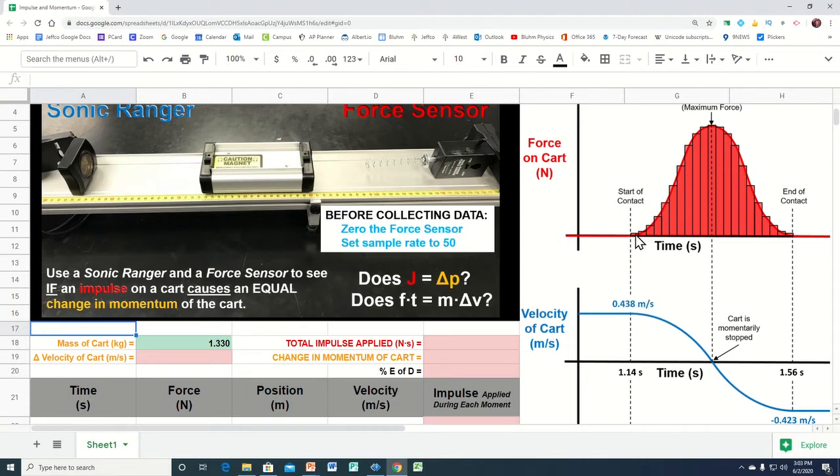As time progresses, the force gets more and more because that spring is compressing more and more. And as the force gets more, the velocity of that cart gets less and less. You might remember that the slope of that line tells you the acceleration of that cart. The slope here is greater than the slope here because it had greater acceleration because there was more force than there was over here.